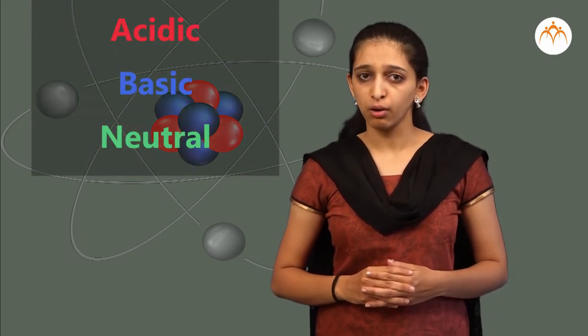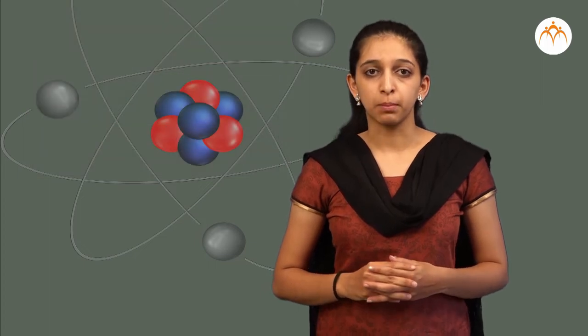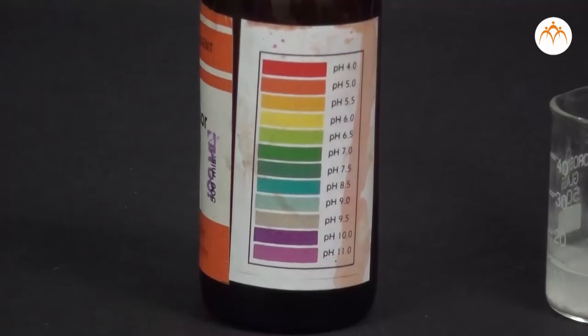By using this scale, we can classify substances into acidic, basic, or neutral categories. By using pH paper, universal indicators, or pH meter, we can measure pH of any aqueous solution.